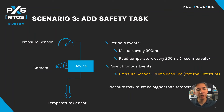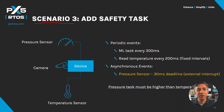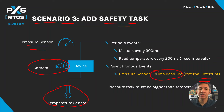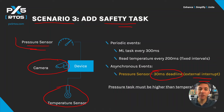In addition to periodic events, embedded systems also handle asynchronous events, typically generated by an external interrupt. In scenario three, we add a safety task. On top of machine learning and temperature reading, we also read from a pressure sensor triggered by an external interrupt. When this happens, we have a 30 millisecond deadline to act. For example, the pressure sensor might be controlling a device where pressure builds up and must be relieved within 30 milliseconds, otherwise something really bad can happen.